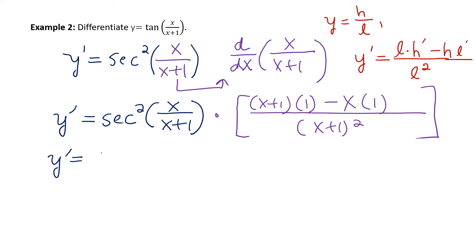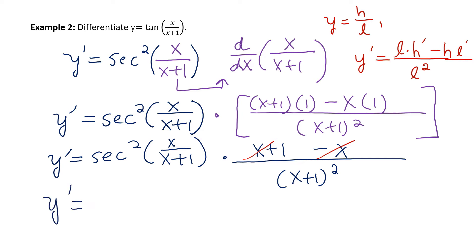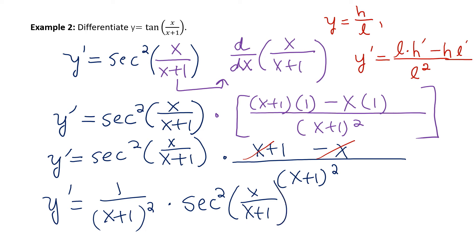So y prime equals secant squared of x over x plus 1, times: the denominator is still the quantity x plus 1 squared, and in the numerator you get x plus 1 minus x. Note that the x's cancel out, leaving 1. Cleaning it up, we write 1 over the quantity x plus 1 squared, times secant squared of x divided by x plus 1.